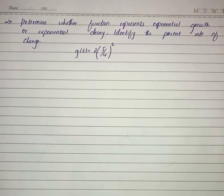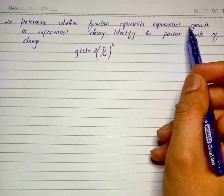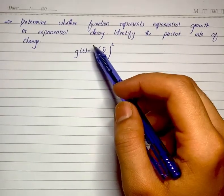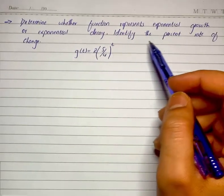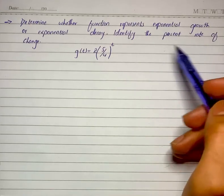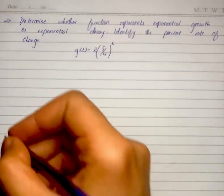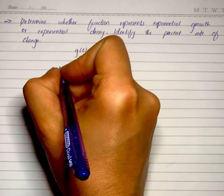Here we have a function and we have to find whether it represents exponential growth or exponential decay, and on top of that we have to find the percent rate of change. So we will write the function that is given.